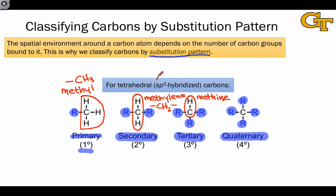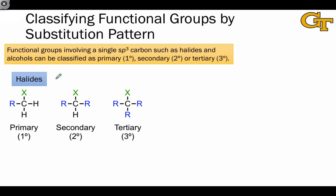This classification scheme is for SP3 or tetrahedral carbons only. It's not used for SP2 or SP hybridized carbons. That said, we can also use this classification scheme to talk about functional groups which involve a single carbon atom that's SP3 hybridized. Two classic examples are shown on this slide. The first is the halides, which include a halogen atom bound to an SP3 hybridized carbon — these are the so-called alkyl halides.